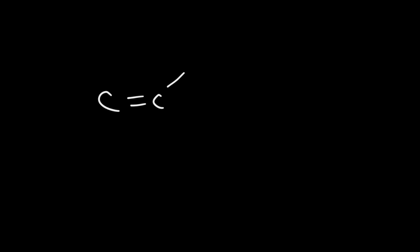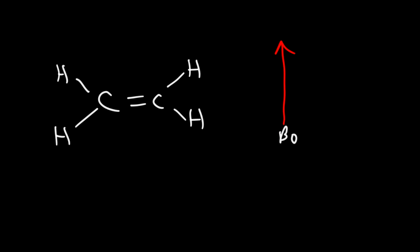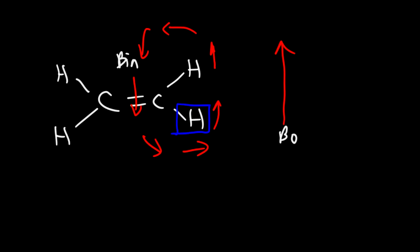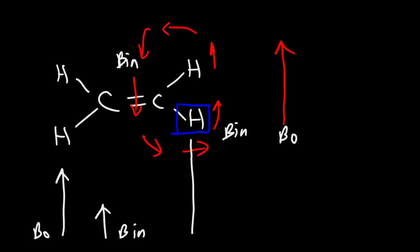Now let's consider the example of ethylene. The situation is similar. We have our external applied magnetic field, and at the center, the induced magnetic field is going to be in the opposite direction, also following a circular path. Focusing on a proton, the induced magnetic field and the applied magnetic field are in the same direction, so the net magnetic field is reinforced. That's why this proton also appears at a relatively high chemical shift.